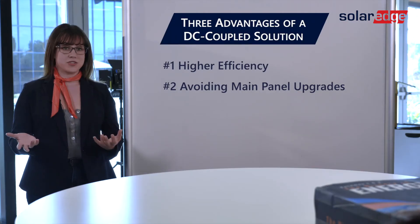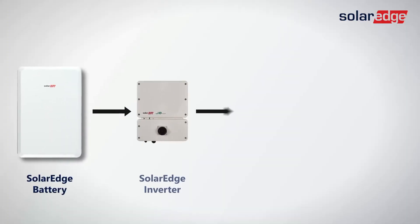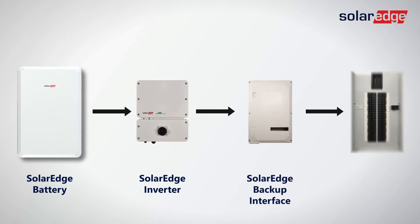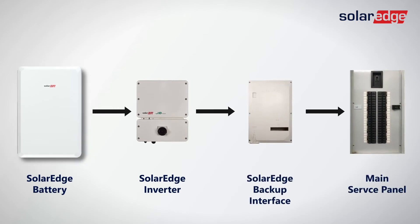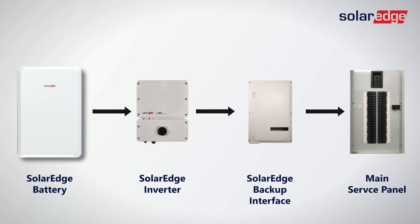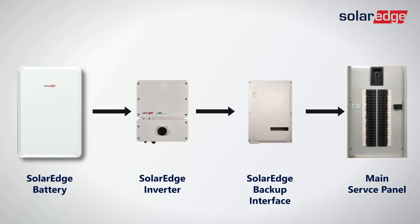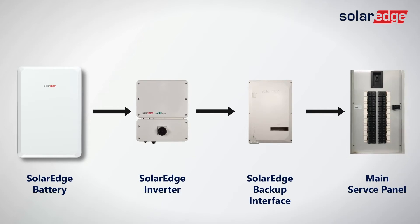They make closing deals really tough. I totally understand. And with the SolarEdge DC coupled solution, because those batteries sit behind the inverter, they're taking up a lot less breaker space in that main service panel. So we're able to avoid main panel upgrades in that case.